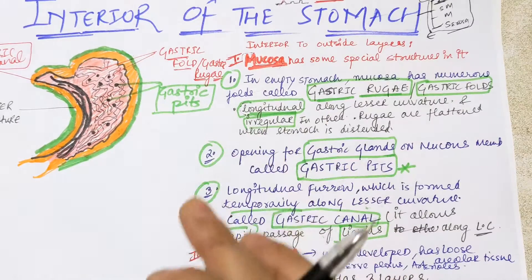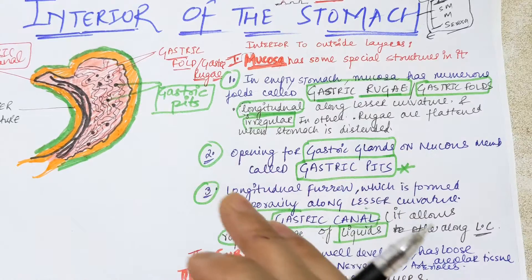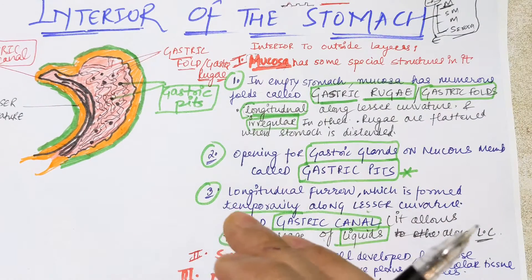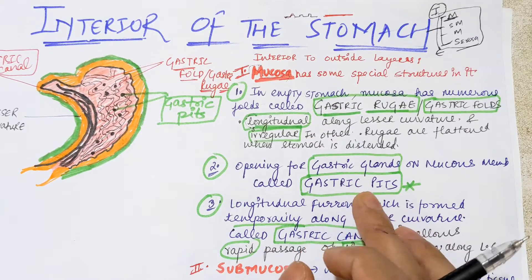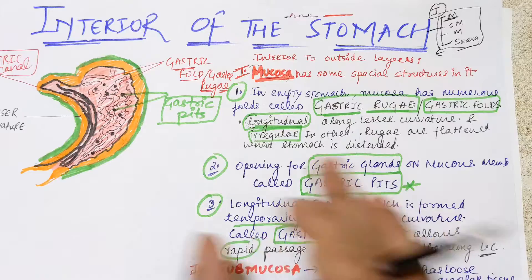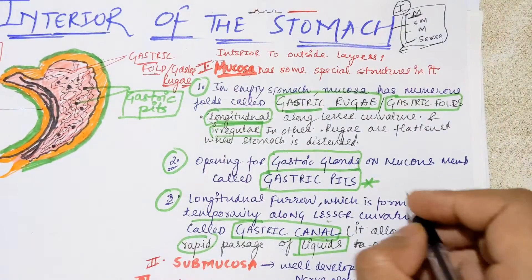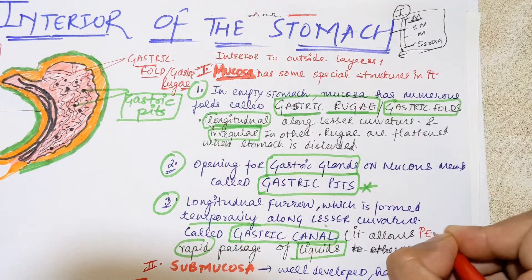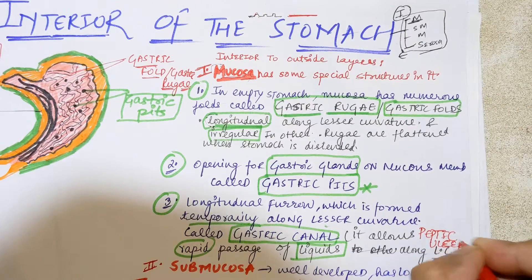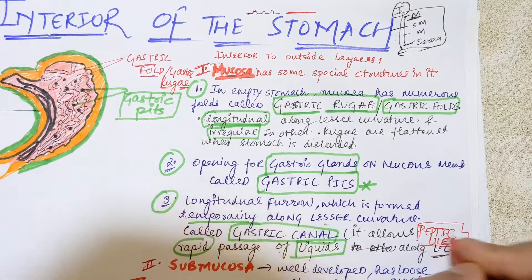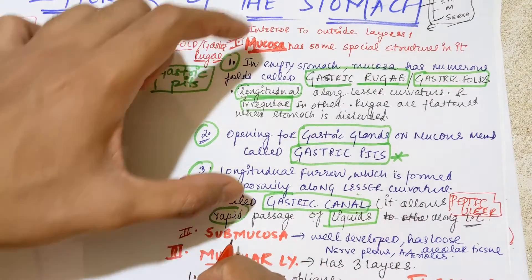There is an important clinical point here: because most liquids passing through the gastric canal are irritable — like alcohol — they make the lesser curvature more susceptible to peptic ulcers. The inflammation of the mucous membrane of the lesser curvature leads to peptic ulcer formation. So the lesser curvature is the most common site for peptic ulcers in the stomach.